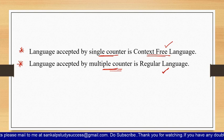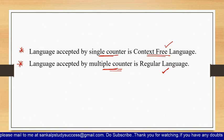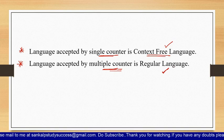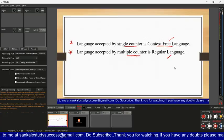These seven different types of Turing machines may appear as long-answer questions from Unit 5. Thank you for watching the video.